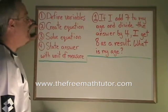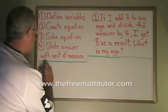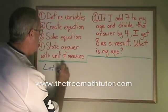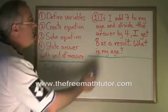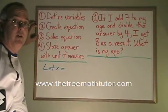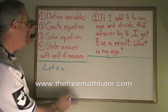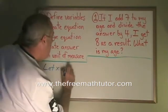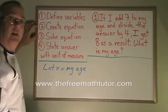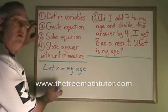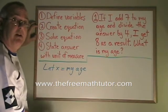The first step is to define the variables. So we say, let x equal, and we define our variable. Usually, the question at the end tells you what you need to define your variable as. So what is my age means let x equal my age. Defining the variable helps us see what we're doing when we're building our equation. It makes the next step easier.